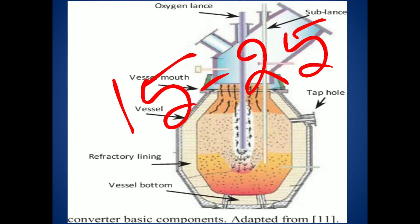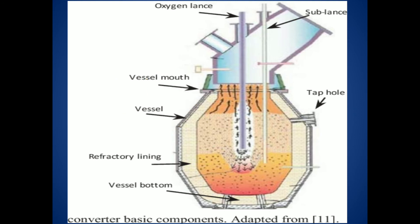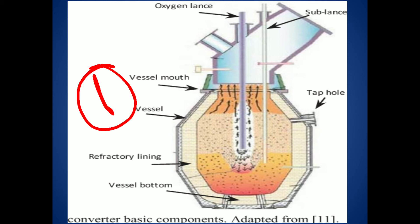One main advantage of the LD converter is that pig iron of any composition can be used. The steel produced has a low nitrogen content. It is a very quick process, and no external fuel is required due to the exothermic reactions. The steel produced is used in manufacturing plates and sheets because of its high ductility.